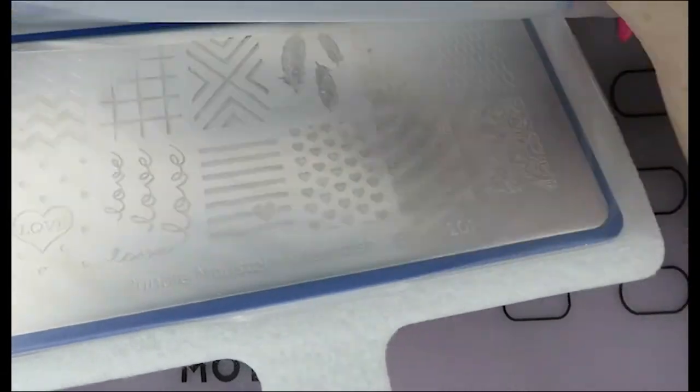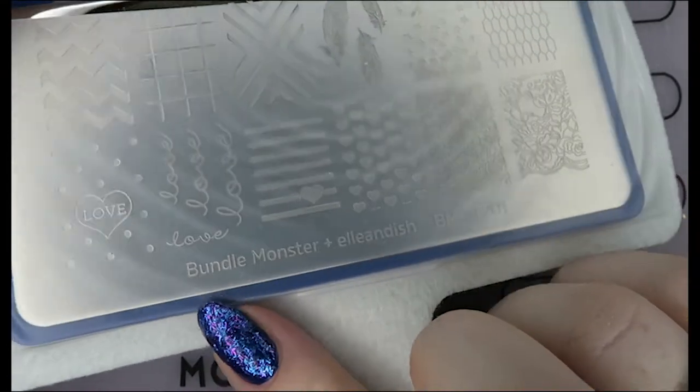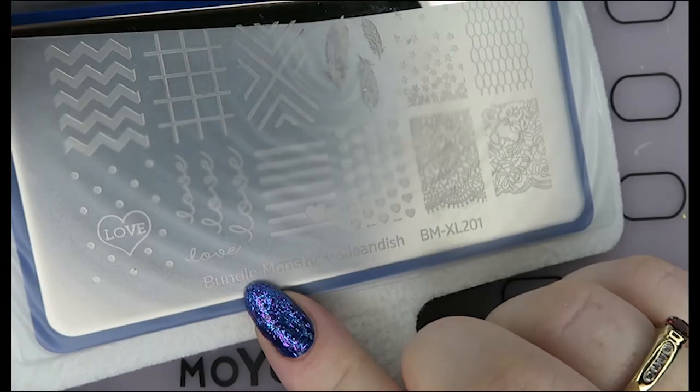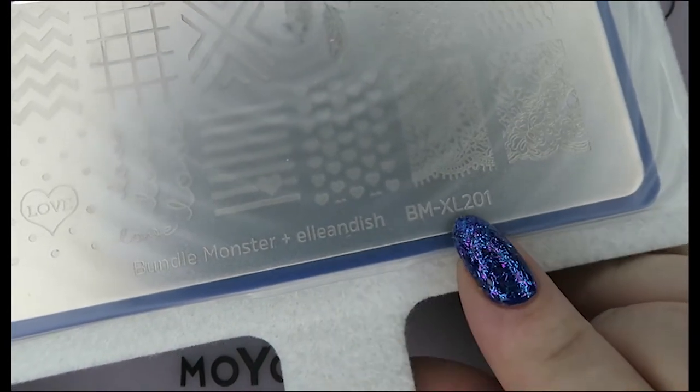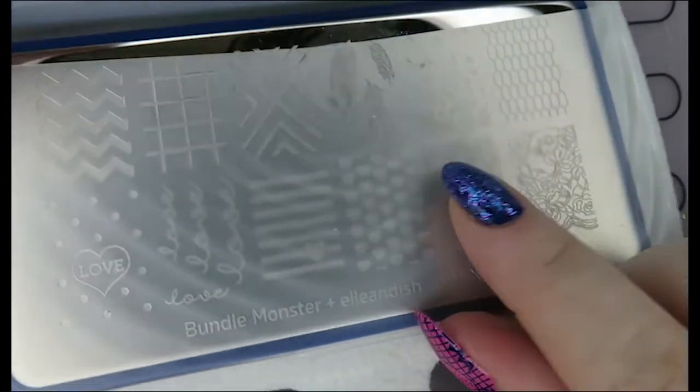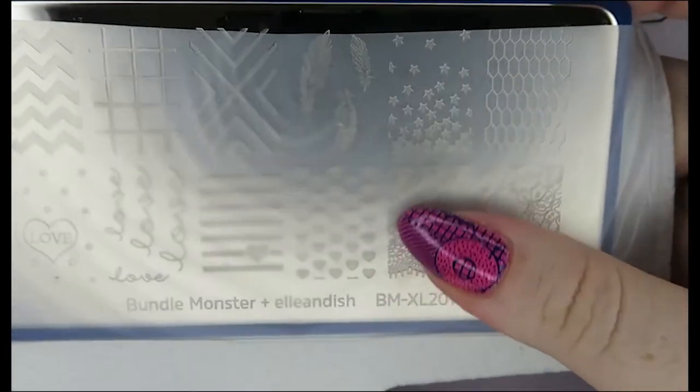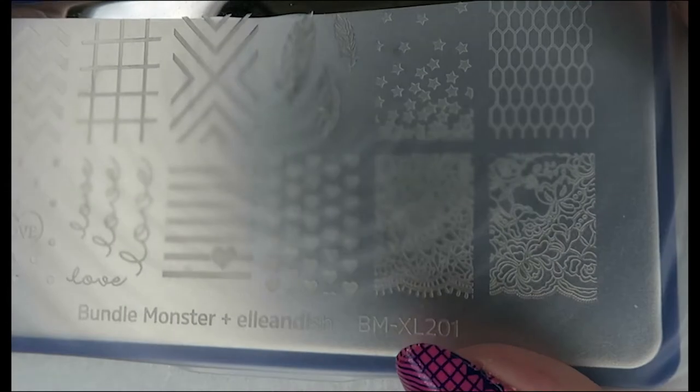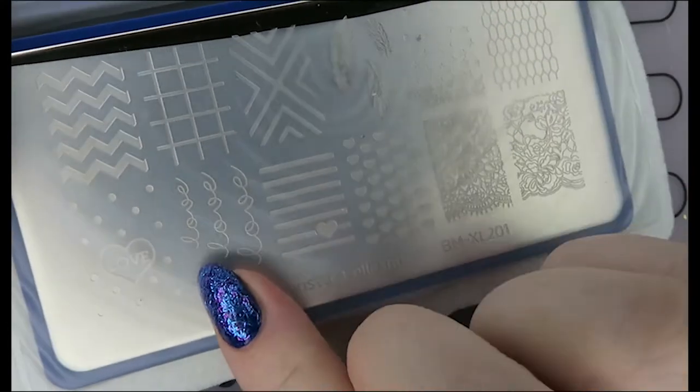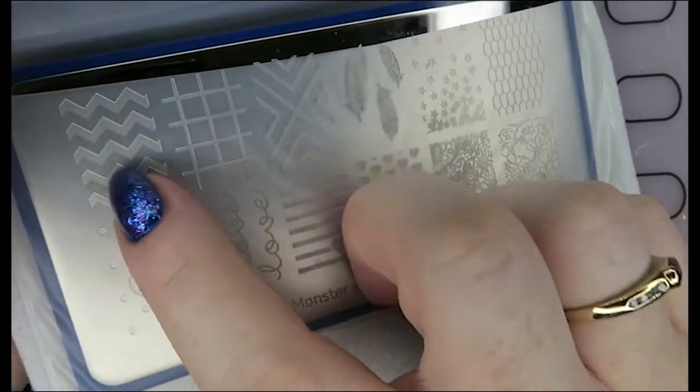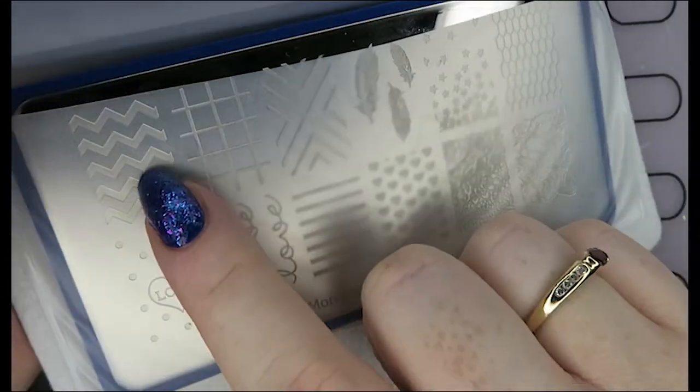Oh, missing space, don't know what that's for. I do that all the time, I don't know why. And this is Bundle Monster with Elan Dish, and this is XL201. This has got lace prints on it. Maybe this should go into my romantic folder, but I guess there's other designs here.